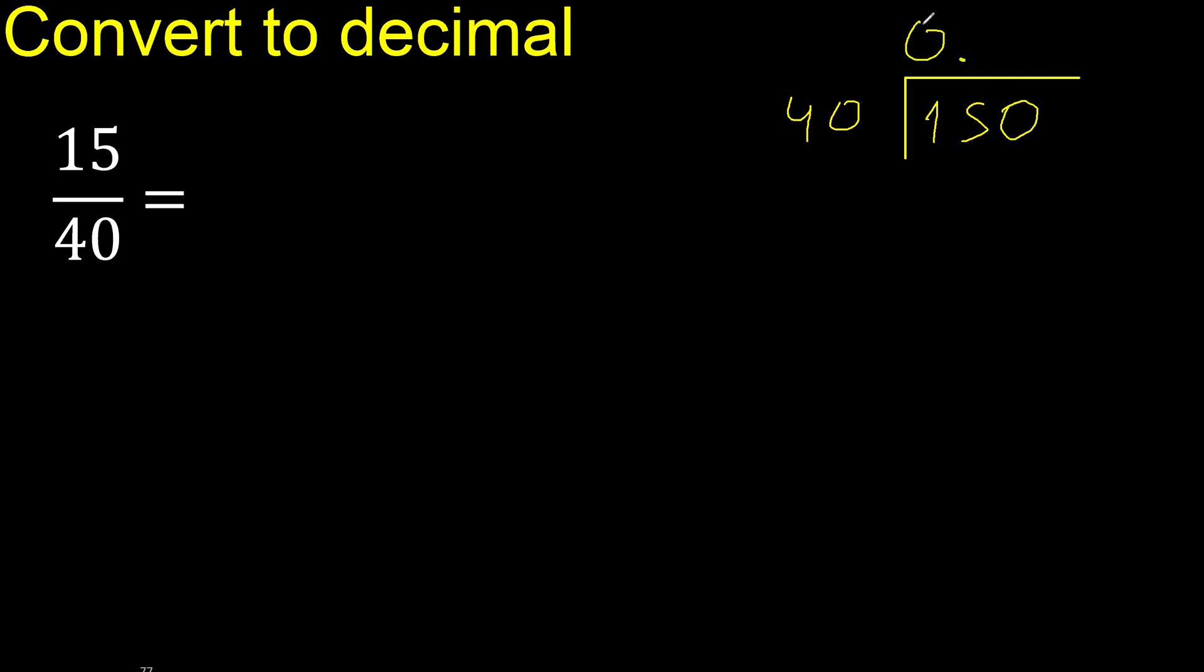Here 0 point. 40 multiply by which number is nearest to 150 but not greater? 40 multiply by 4 is greater, multiply by 3 is 120.